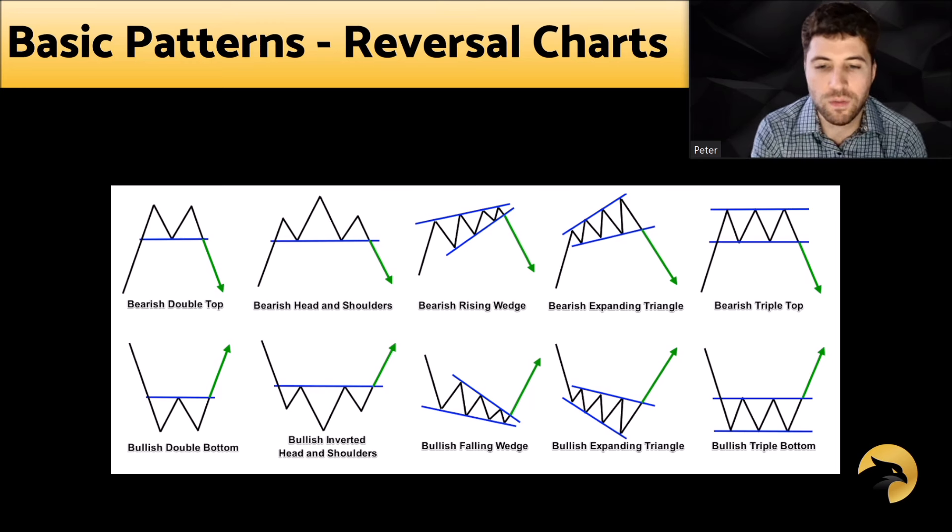Another example is the cup and handle, where you see a rounding pattern formed, then a backing-up action on the handle. That is often a great entry once you see bullish momentum continue from the handle. The break of the high of the falling wedge can be an early entry, and a later entry can be once you break the top of the structure from the previous high. The same works for the inverse head and shoulders and inverse cup and handle.